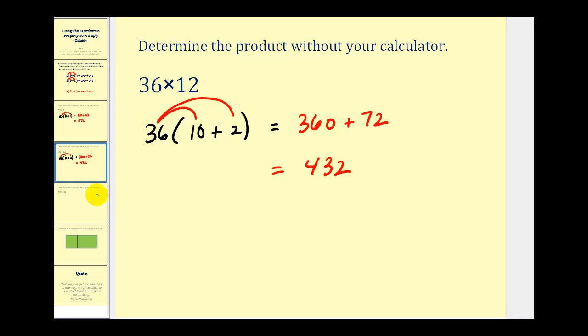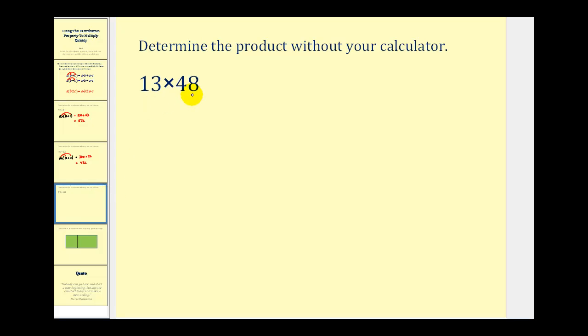Let's go ahead and take a look at one more. Here we have 13 times 48. What we could do is think of this as 13, instead of times 48, we could write 48 as 50 minus 2. Notice now we have a difference. But the idea here is that now we can multiply 13 and 50 and also 13 and 2 and then find the difference.